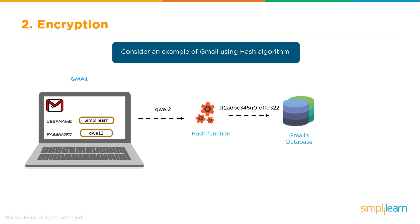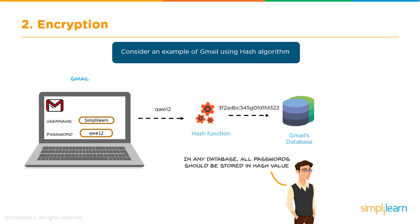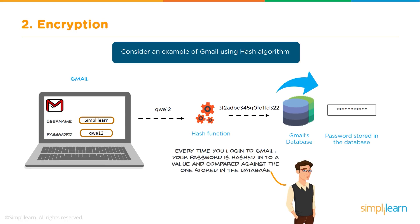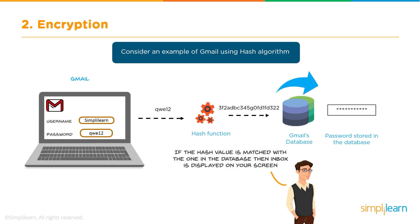Let's consider an example of Gmail using a hashing algorithm. Whenever you enter a username and password, that password is never directly persisted in Gmail's database — it is stored using a hashing function. Once you have created your password, every time you log in your password is passed to the hashing function and compared with the hash value persisted in the database. Once both hash values match, only then are you allowed to log in. So every time you log into Gmail, your password is hashed and compared against the one stored in the database, and the inbox is displayed on your screen.